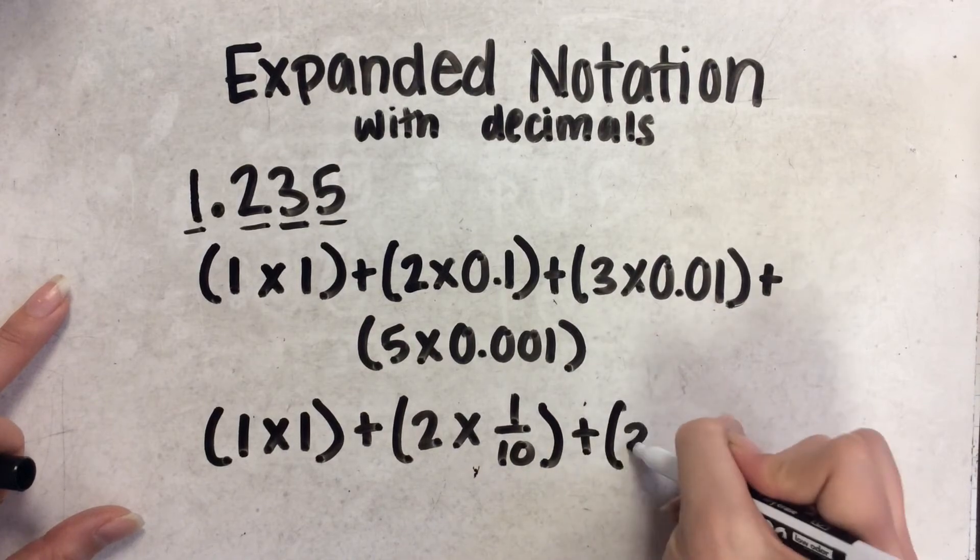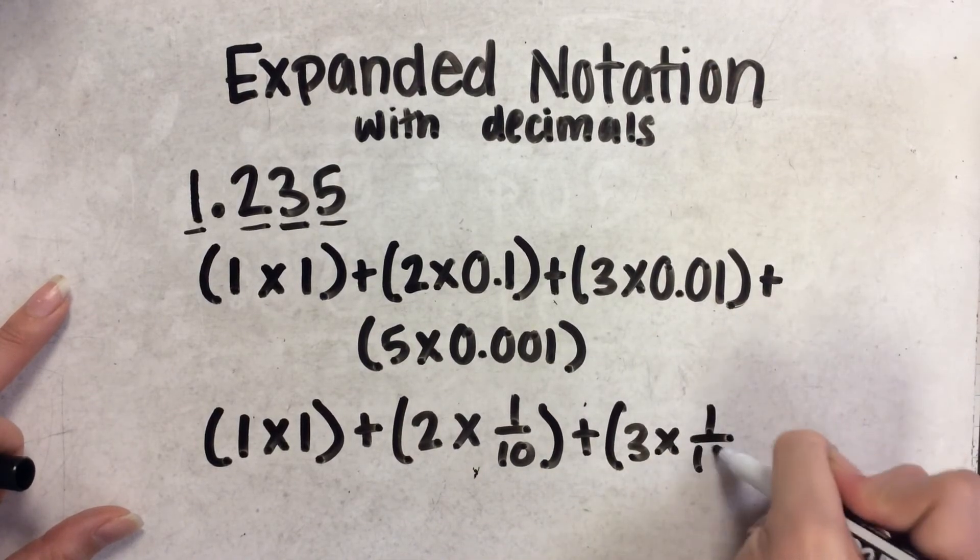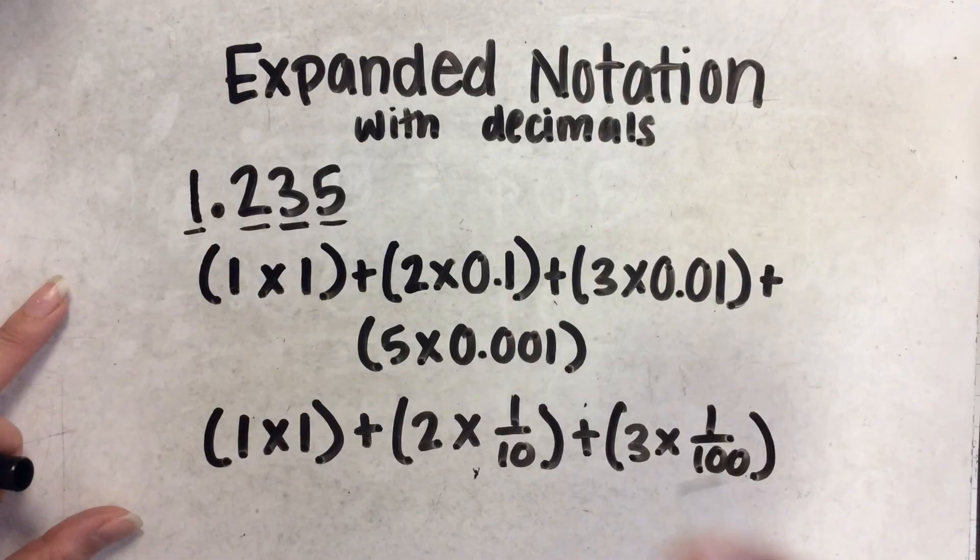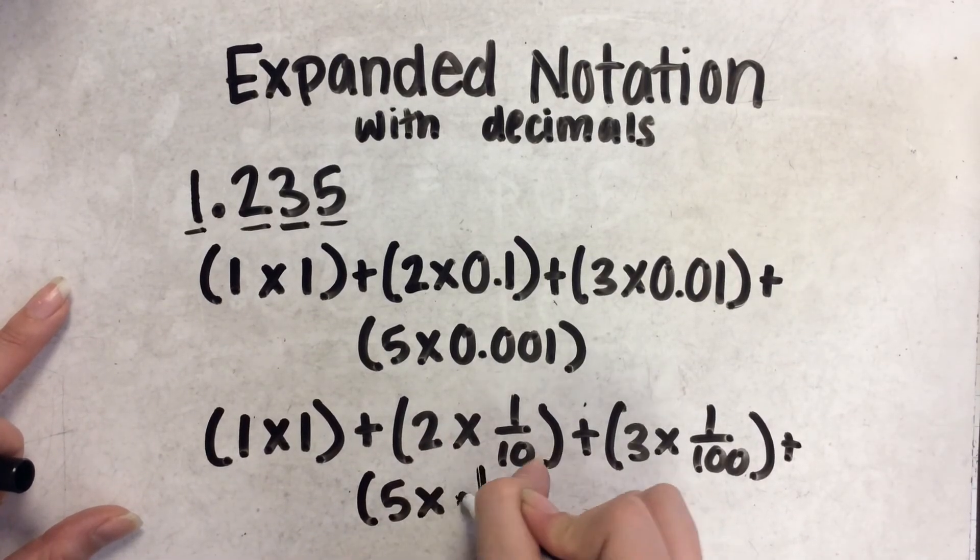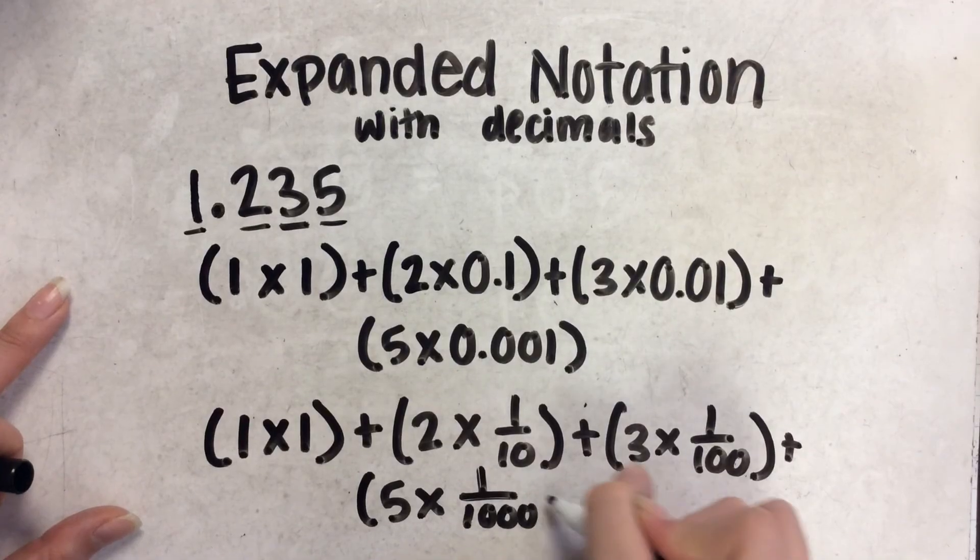Then, plus 3 times 1 hundredth as a fraction. Then, plus 5 times 1 thousandth.